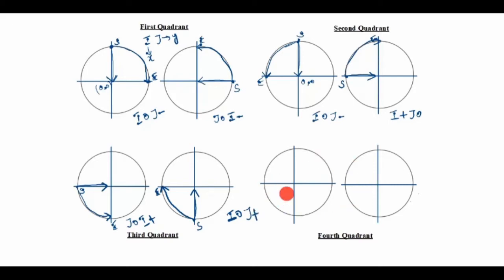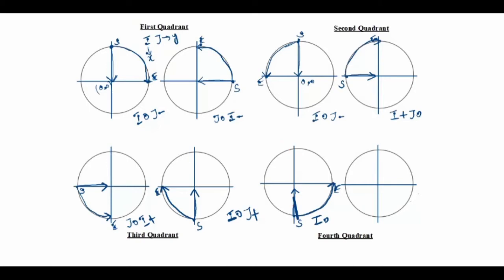Now we go to the fourth quadrant. Start point is here, end point is here. The arrow goes up. On the X-axis, the end position is here, so I value is 0. For J, the Y-axis arrow goes up, so J is plus.